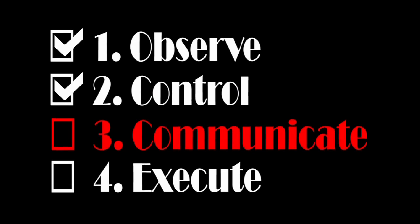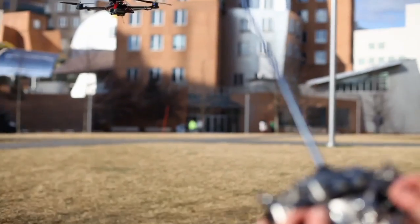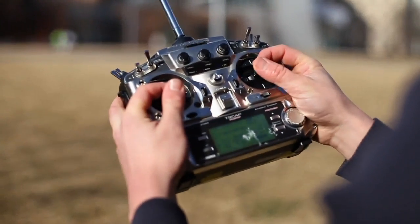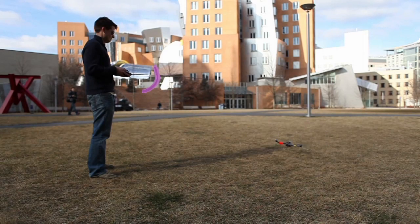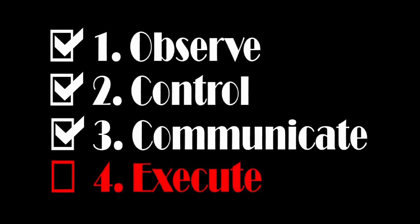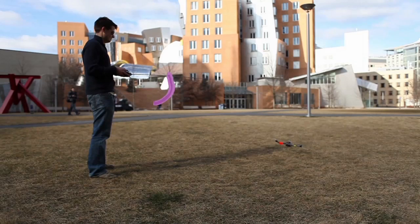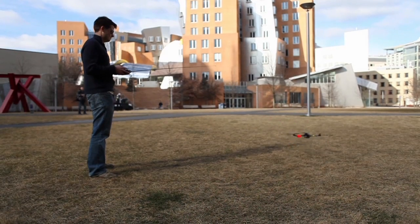To tell the quadrotor what he's decided on, the pilot uses a radio transmitter, which is basically a fancy remote control. Finally, the quadrotor listens for the radio commands and adjusts the speed of each motor accordingly.